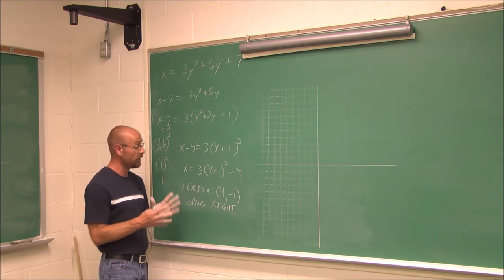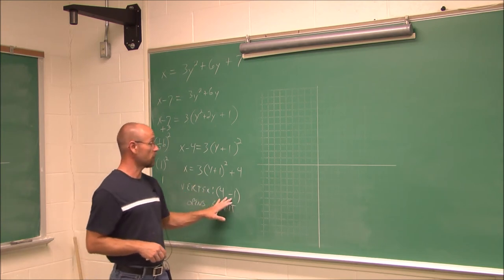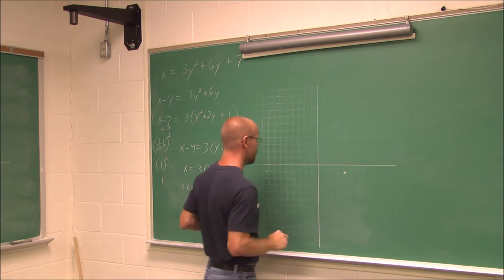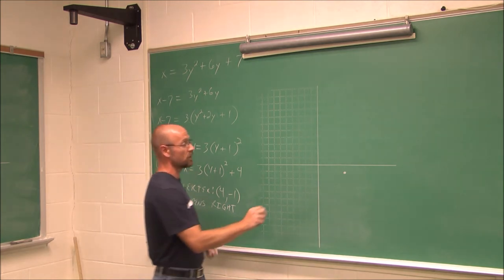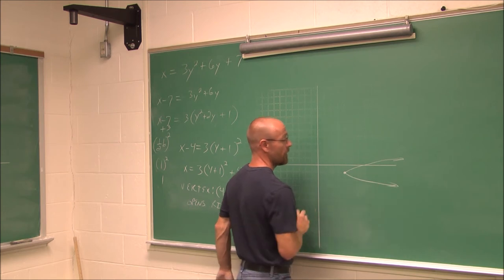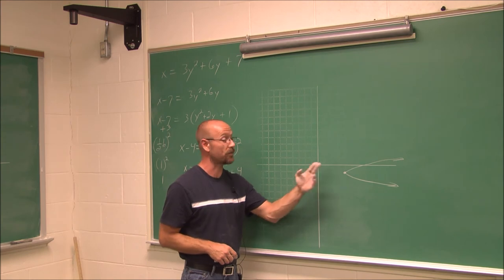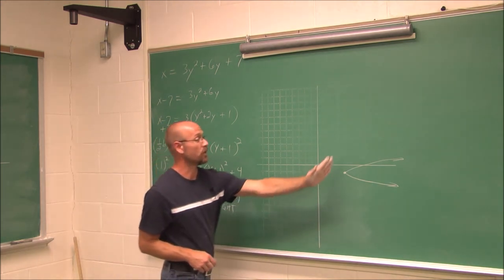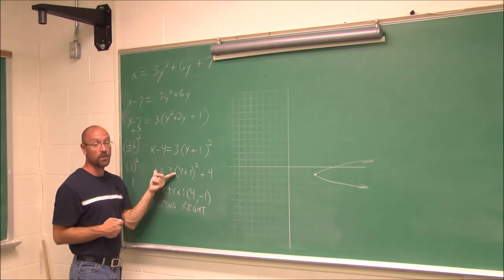So I'm ready to graph this parabola, even though it's not a function. I'll start with the vertex at (4, negative 1) and graph a narrower parabola opening to the right from that point. There you have the parabola graph — it's not a function because it wouldn't pass the vertical line test, but we can still put it on a graph. Completing the square was a lot of work, and you will be asked to do it in some of your math classes — it's a tool you'll need in future classes.